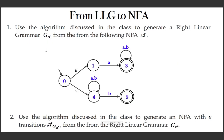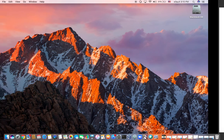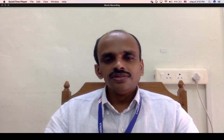With this we established that the class of languages accepted by the family of regular grammars is precisely the set of regular languages. Two assignment questions: first, use the algorithm to generate a right linear grammar G_A from the given NFA. Second, from G_A apply the algorithm to generate an NFA with epsilon transitions. With this we finish the lecture. Thank you.